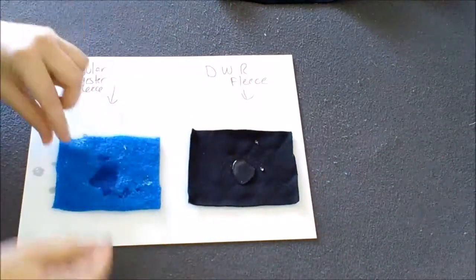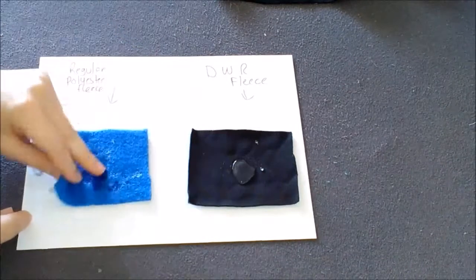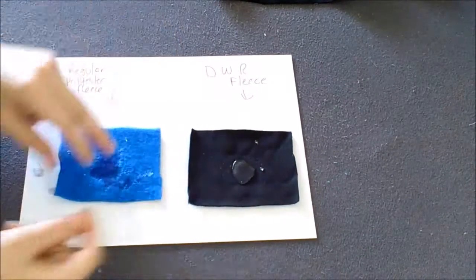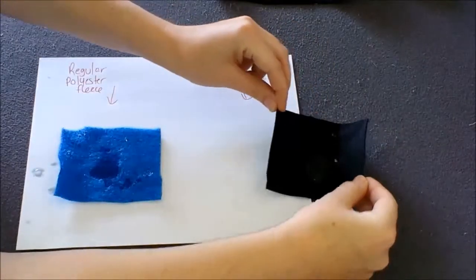So you can see it's already soaked through, the paper is wet and the DWR fleece is still completely dry.